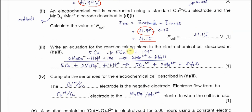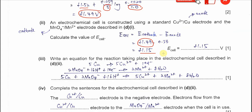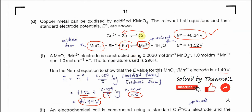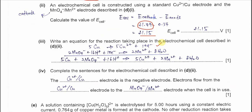Part 3: To write the overall equation, reverse the copper half-cell equation so copper is oxidized: Cu → Cu²⁺ + 2e⁻. Keep the manganese half-cell as written. To cancel electrons, multiply the copper half-cell by 5 and the manganese half-cell by 2. This eliminates the electrons, and combining the reactants and products from both half-equations gives the overall cell equation.